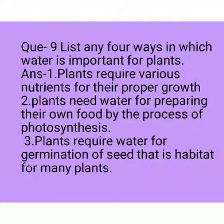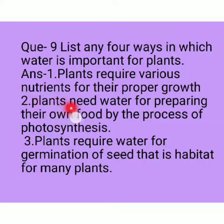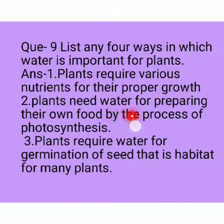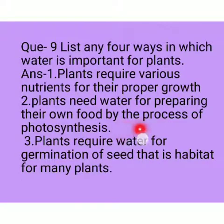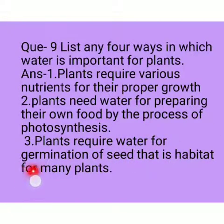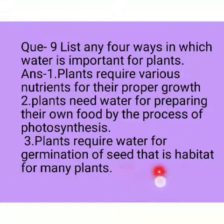Question 9: List any four ways in which water is important for plants. Answer: Plants require various nutrients for their proper growth. Plants need water for preparing their own food by the process of photosynthesis. Plants also require water for germination of seeds, which is important for many plants. In this way, water is useful for plants.